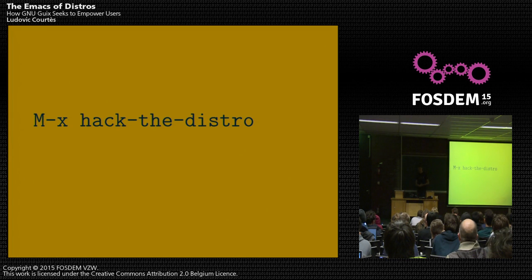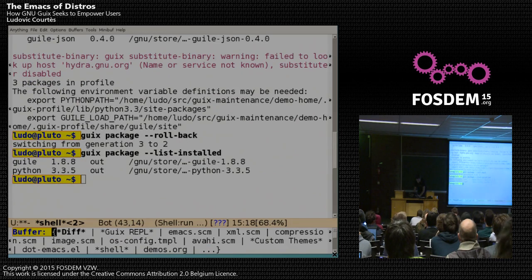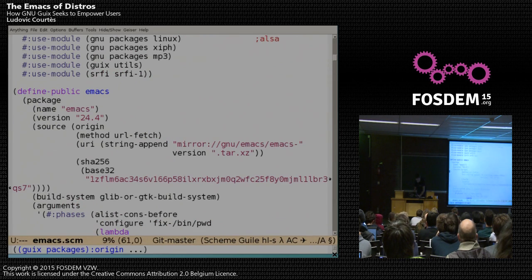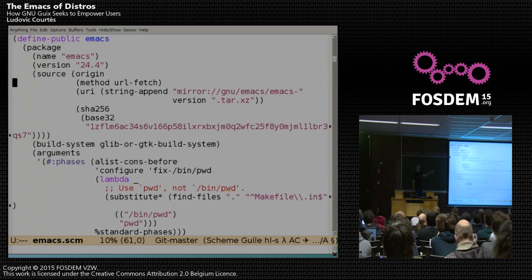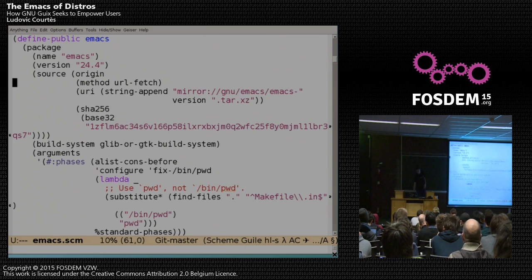Let me show a little bit how a user can hack Geeks. Let's take, for instance, the definition — the recipe — for the Emacs package. It looks like this. It's actually Scheme code, but you don't really need to be a Scheme hacker to understand what's going on here — it's purely declarative. We're giving the name, version, the URL of the source code, a bunch of metadata, and the kind of build system which is being used.